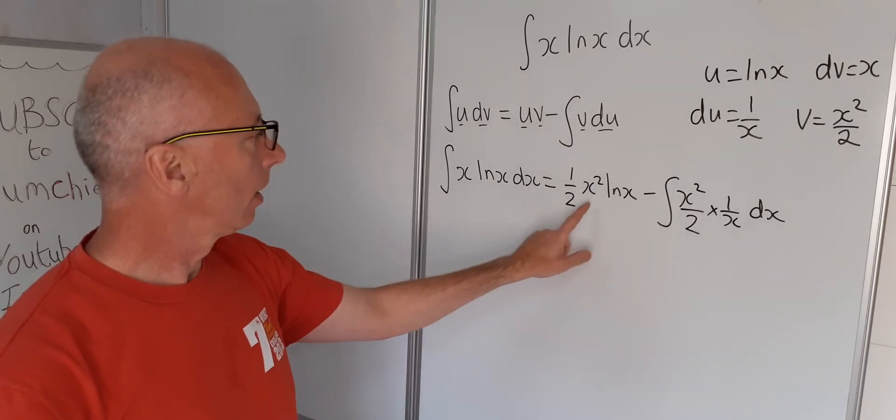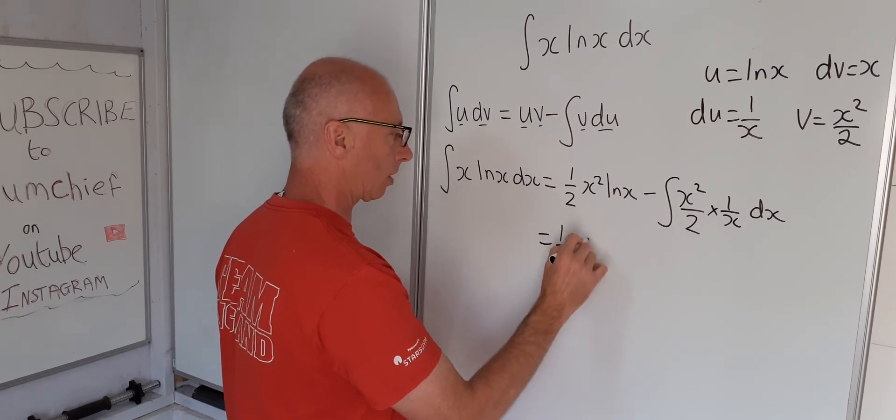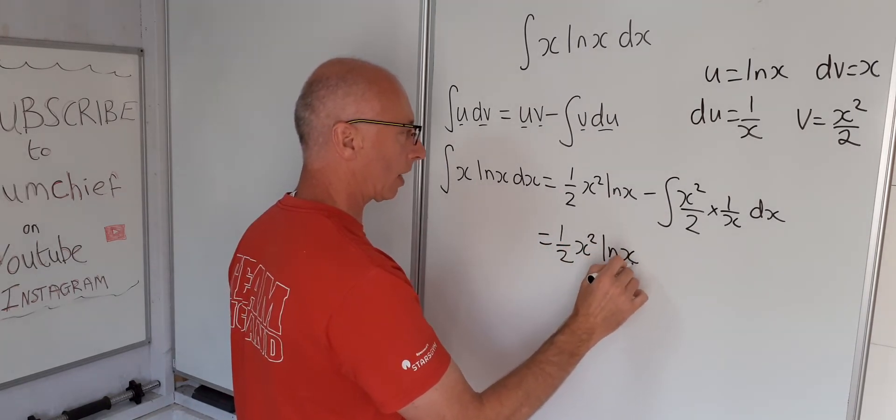Okay, so this is part of the answer so that can stay. So that's half x squared natural log of x.